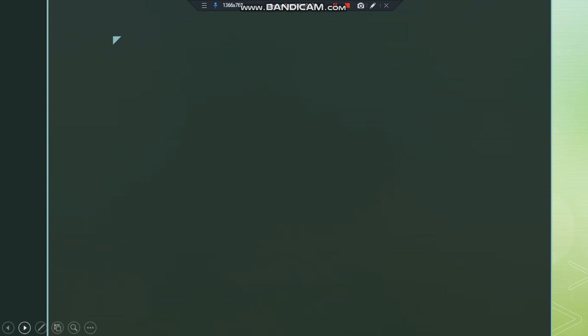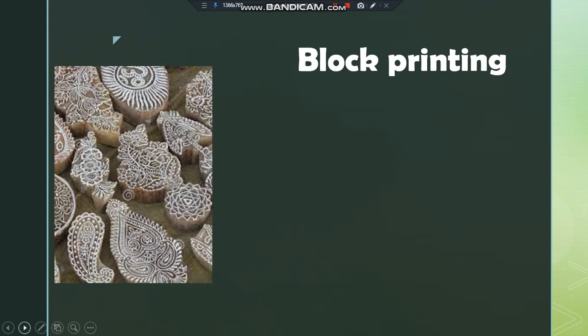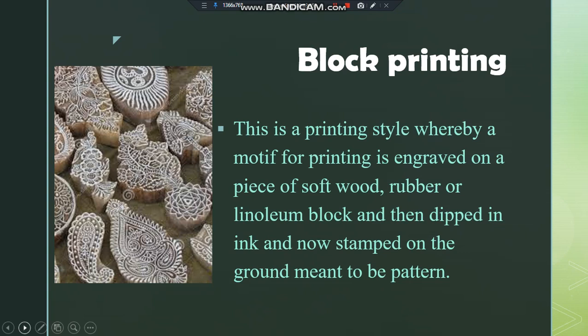We also have block printing. Just as the name suggests, here we use a block to stamp on a fabric to create different meaningful patterns. You get your motif that you want to print on a cloth, then transfer it onto soft wood, rubber, or a linoleum block. After transferring the image, you get your cutters and cut out the positives, or you can also cut out the negatives. Then you get your printing ink and use a roller to roll over the side of the block that has the motif.